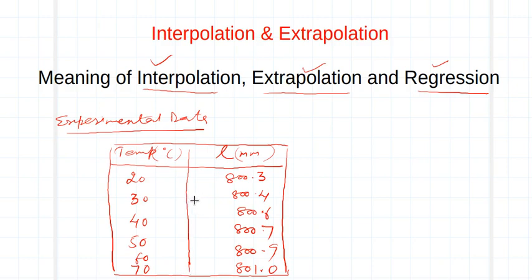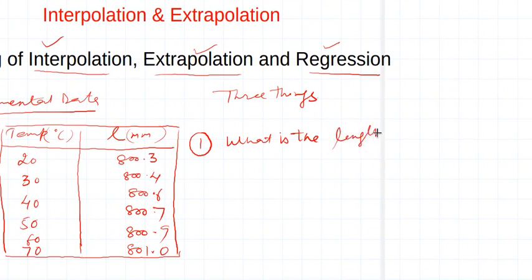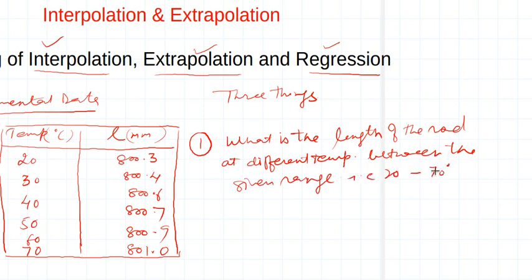Now, we generally need to determine three things. The first is: what is the length of the rod at different temperatures between the given range, that is 20 to 70 degrees? For example, if we are interested to find out the length of the rod at 24°C, how do we determine it?